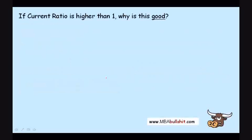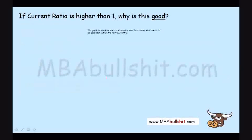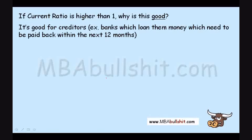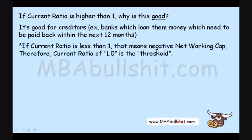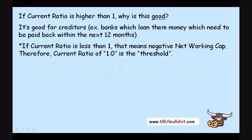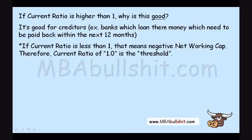If the current ratio is higher than 1, this is good for creditors — for example, banks which loaned money that needs to be paid back within 12 months. If the current ratio is less than 1, that means negative net working capital. The current ratio of 1.0 is the threshold — a company is in trouble if the current ratio is less than 1.0, because there are not enough assets to pay for its current liabilities.